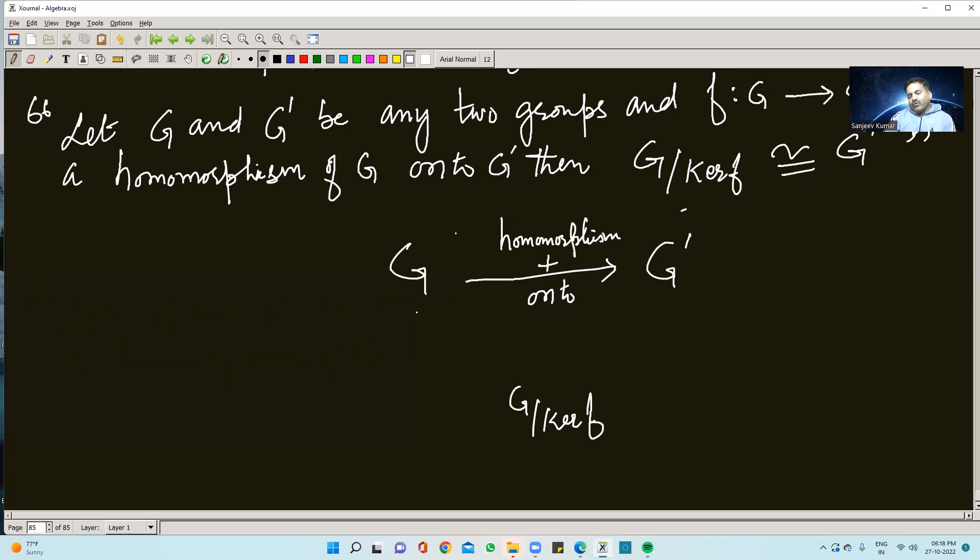And by the third theorem of homomorphism, we have to prove that G and G by kernel of f are isomorphic to G dash. What this means is that isomorphism will be onto and one-to-one. So I hope now you understand the theorem, what it is.